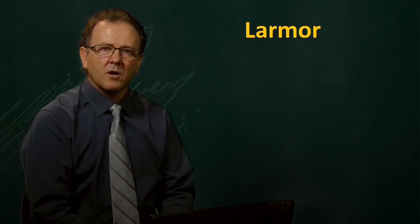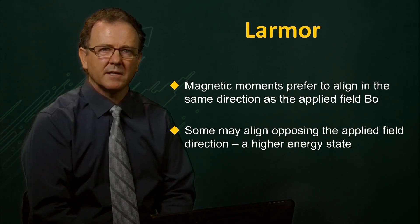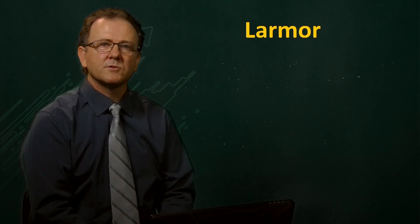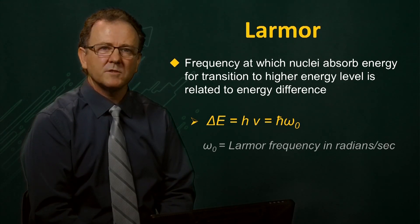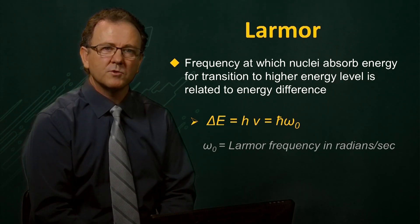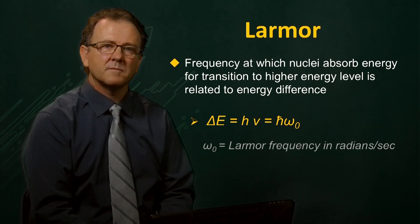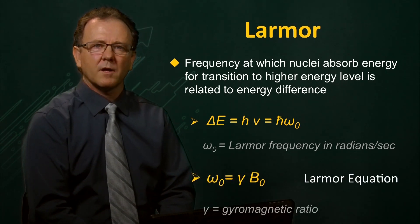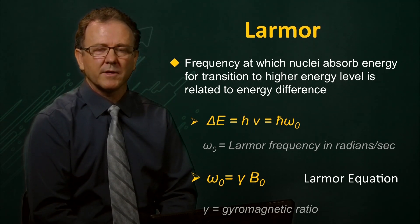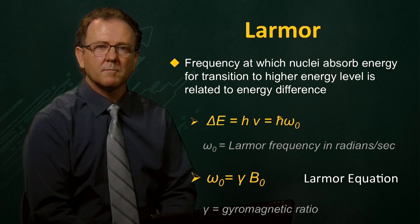While the magnetic moments prefer to align with the applied field, some may align opposing the magnetic field. This orientation is a higher energy state than when the spins align with the field. Planck's law tells us that the frequency of the energy absorbed by the spins to make a transition from the low energy level to the high energy level is directly proportional to the energy difference between the levels. This frequency is the Larmor frequency mentioned earlier. Since the energy difference is directly proportional to the applied magnetic field strength, we know that the Larmor frequency is also determined by the field strength, B0. This relationship is perhaps the most important principle in MRI and is called the Larmor equation.